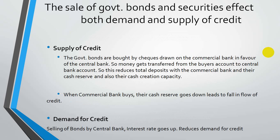When commercial banks are buying, their cash reserves also go down, leading to a fall in the flow of credit they supply. Regarding demand for credit: when the central bank sells bonds, the rate of interest goes up, which reduces demand for credit because nobody would want to pay extra to avail credit. So this measure can help reduce the money supply for a time.